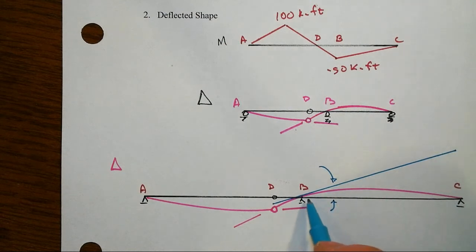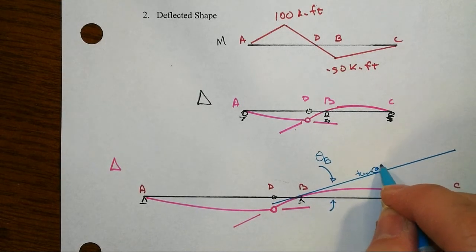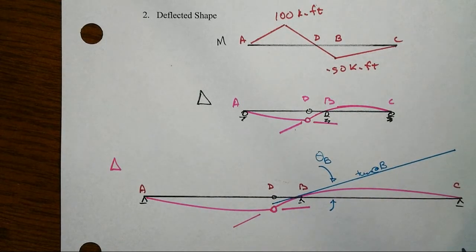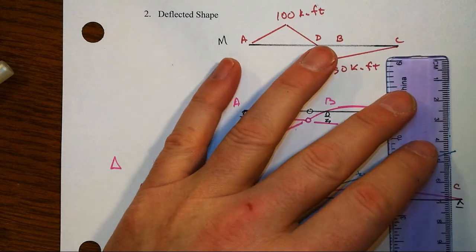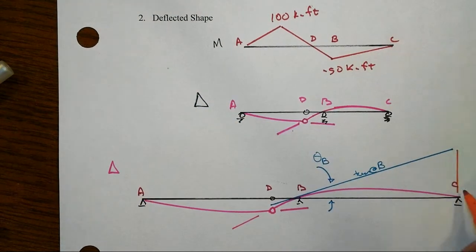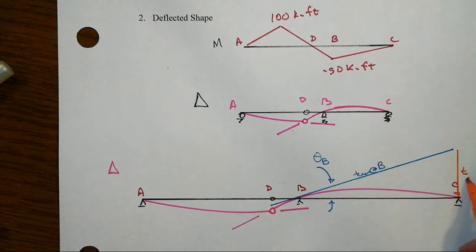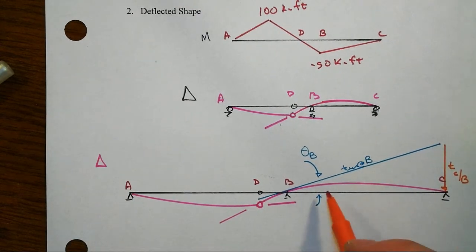Note that the slope that we get, or the rotation at B is right here, versus the tangent at B. And from then, the fact that we go all the way across, we can get that angle, which sets up similar triangles by looking at this tangential deviation, that's T at C with respect to B. So that's a big thing right off the bat.